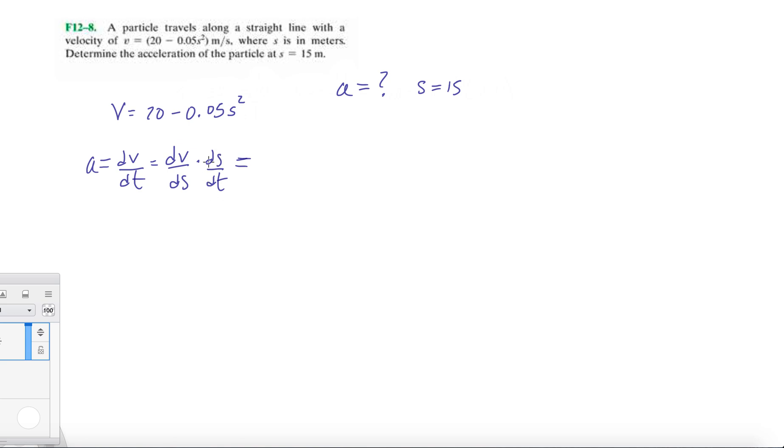Then ds/dt over here, that's just the velocity. And then dv/ds, that's just the first time derivative of velocity with respect to space.